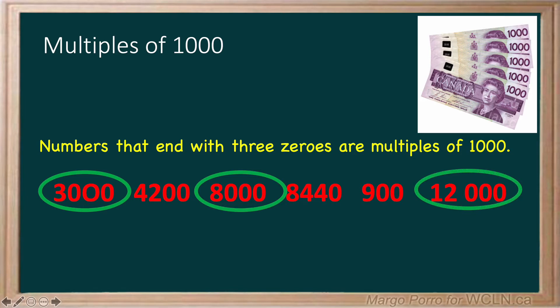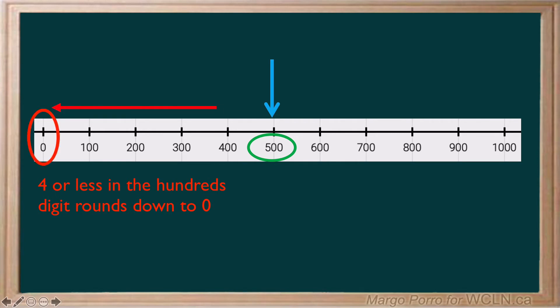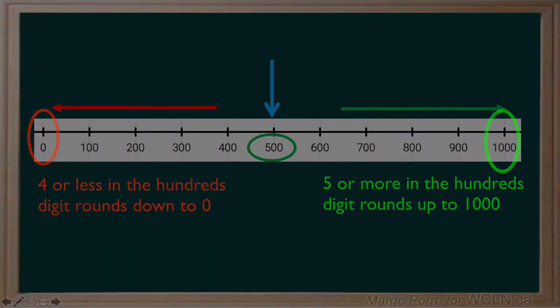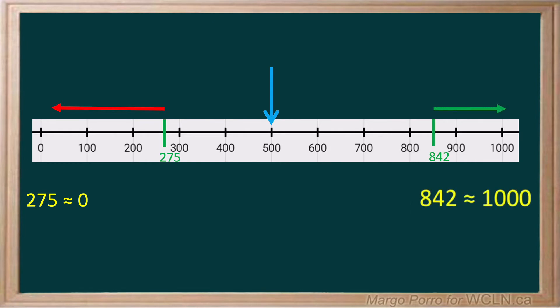Let's explore rounding to the nearest thousands. First, let's think about number lines. Between zero and one thousand, five hundred is the midway benchmark. Anything with a four or less in the hundreds rounds down to zero. Anything with a hundreds digit of five and up rounds up to one thousand. On this number line, two hundred seventy-five is below the midway five hundred. It rounds down to zero because it is closer to zero than one thousand. Eight hundred forty-two rounds up because it is closer to one thousand than zero.